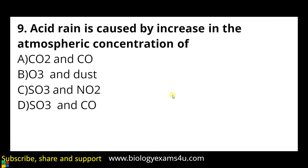Question number nine: acid rain is caused by an increase in the atmospheric concentration of — a) carbon dioxide and carbon monoxide, b) ozone and dust, c) sulfur dioxide and nitric oxide, d) sulfur dioxide and carbon monoxide.